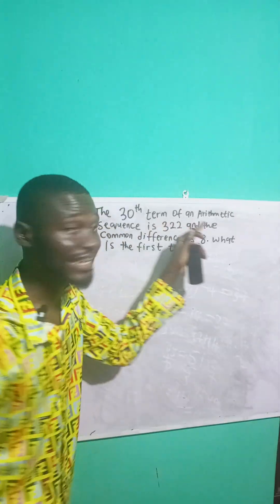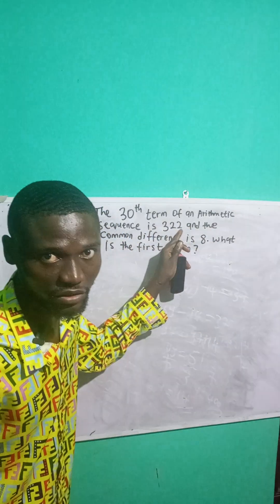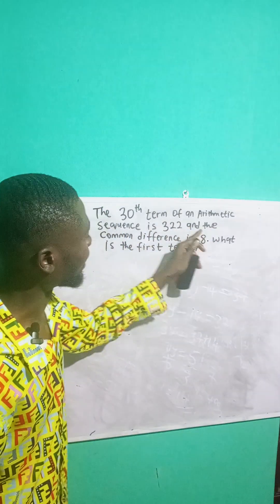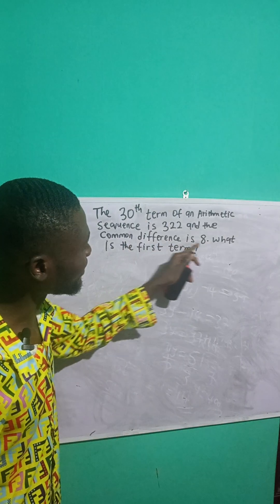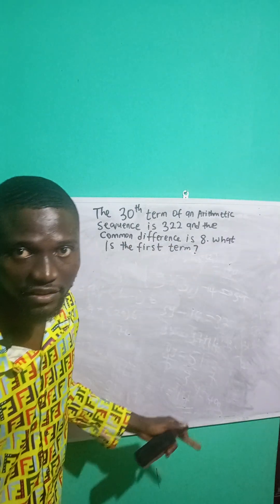The 30th term of an arithmetic sequence is 322, and the common difference is 8. What is the first term?